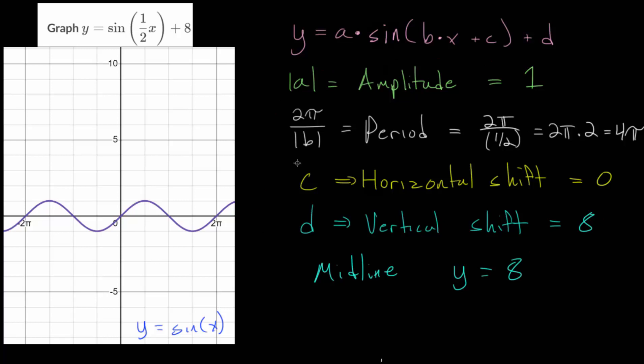And once we know all of these parameters, we can now start applying these transformations. And I would recommend dealing with the shifting first. So let's move the midline up 8 units. And we can draw that in. It would have a new midline at y equals 8. And we'll just have this line in as a reference point that we can use.